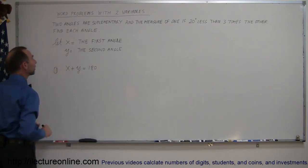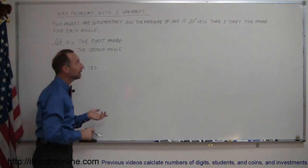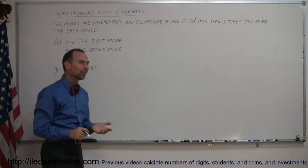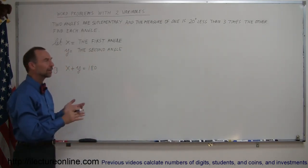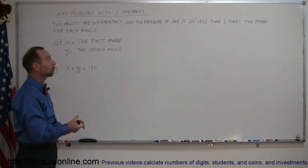Now to get the second equation, they give us the information that says the measure of one is 20 degrees less than three times the other. Now, does it really matter which one I take as one and which one I take as the other? Not really. We're going to get two angles one way or the other.